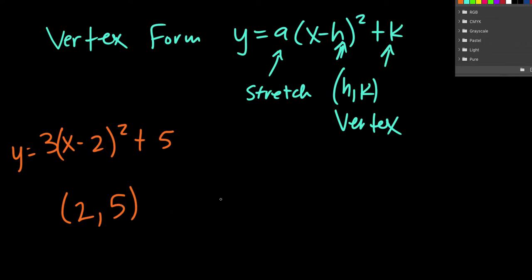Alright, so this is our vertex (2,5). Now if we're going to graph this, we have to make sure we set up our axes. So we have 1, 2, 3, 4, 5 on both axes. That's where our vertex is.